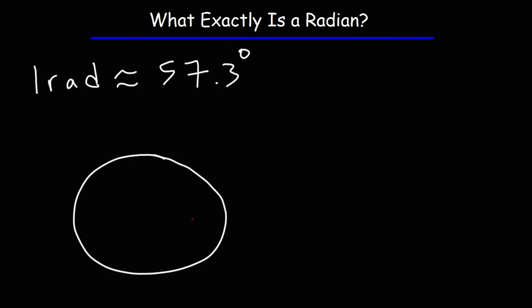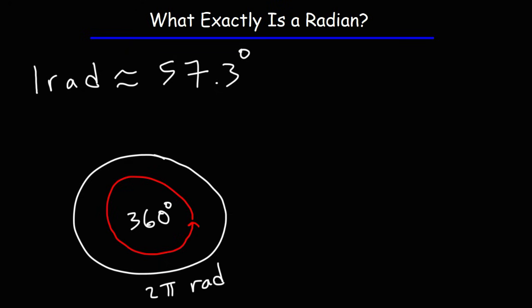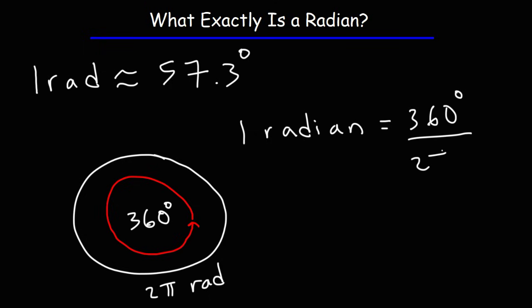If we travel starting from one point on a circle all the way back to that same point — if we make one full rotation — what is the angle in degrees that we have traveled? A full circle is equal to 360 degrees, and it's also equal to 2 pi radians. So 360 degrees is equal to 2 pi radians. To get the angle measure of one radian in degrees, take 360 degrees and divide it by 2 pi radians.